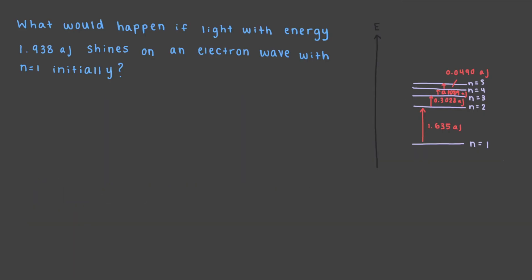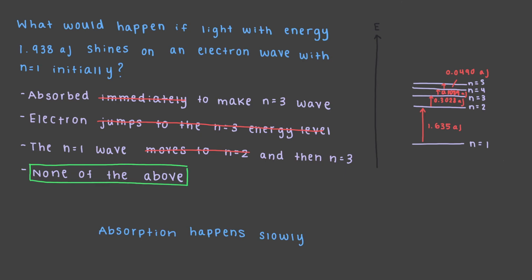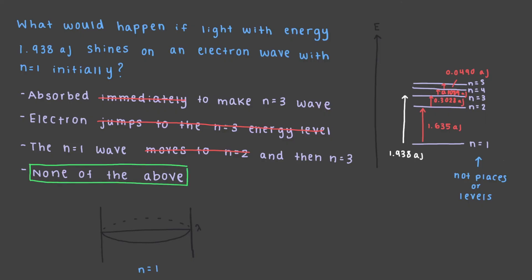What would happen if light with energy 1.938 attojoules shines on an electron wave with n equals 1 initially? None of the incorrect answers are correct — each represents a big misconception about what electrons are and how they behave. We know absorption happens slowly, over about 100,000 oscillations, so there is no jump and it takes time. Also, n equals 2 and n equals 3 are not places or levels — they are different descriptions of the electron wave. This light is resonant with the n equals 1 to n equals 3 transformation, so our wave with 1 loop gains 2 loops to become an n equals 3 wave, which is higher in energy.